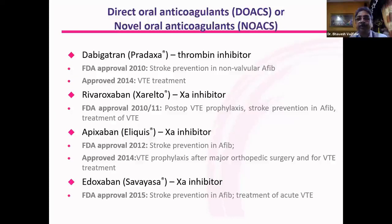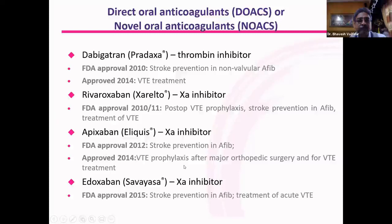We have different new DOACs — initially called NOACs, but no longer novel, so now called direct-acting. Products include dabigatran, which is a direct thrombin inhibitor, and the factor Xa inhibitors, which include rivaroxaban, apixaban, and edoxaban — which is not available here. Rivaroxaban is a directly acting oral anticoagulant that inhibits factor Xa. Factor Xa is the common pathway for both the intrinsic and extrinsic coagulation pathways, so inhibiting it here is really very effective.